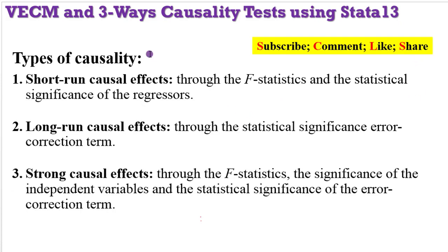Let's talk about the types of causality. The first is the short-run causal effect, which you can obtain through the F-statistics and the t-statistics of the regressors. For long-run causal effect, you can only obtain that through the t-statistics of the error correction term. The strong causal effect is obtained from the F-statistics, the t-statistics of the regressors, and the t-statistics of the error correction term.